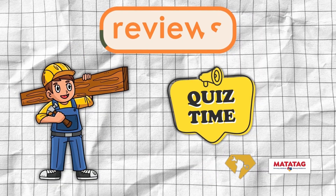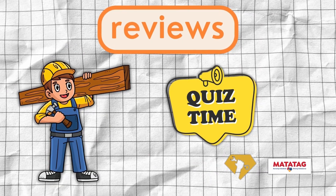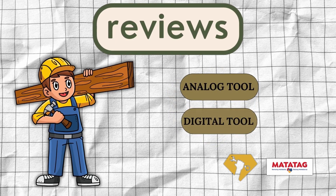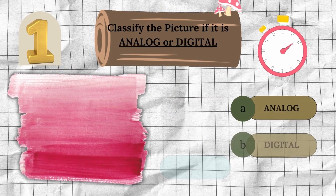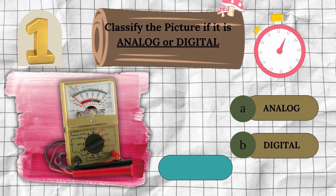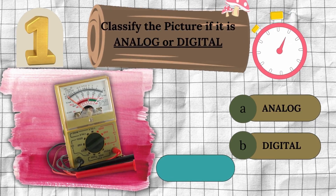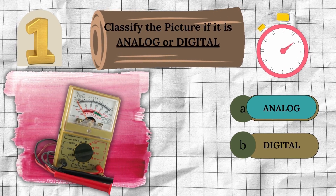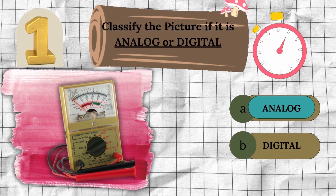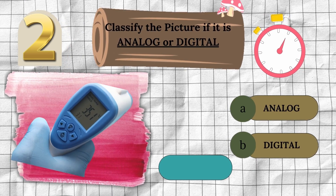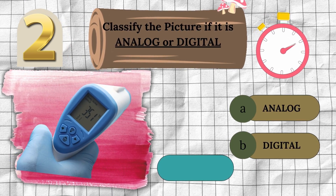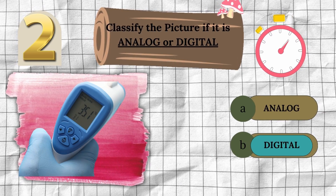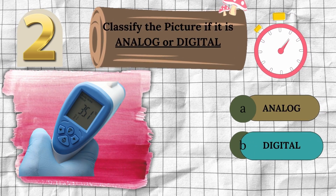Now, let us have a short review first. I'll show you pictures of various tools, and your task is to categorize each one as either an analog tool or a digital tool. Number one, classify this picture. That's correct — the answer is indeed analog. Give yourself a round of applause. Number two, classify this picture. That's correct — the answer is indeed digital. Give yourself a round of applause.